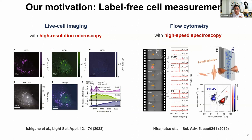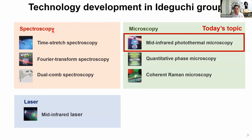Our group's motivation is label-free cell measurement, and we develop various kinds of measurement techniques. For example, we build high-resolution microscopy, which can be used for live cell imaging — that's what I'm talking about today. We're also developing high-speed spectroscopy techniques for flow cytometry applications. We develop various spectroscopy and microscopy techniques, and we also develop the lasers themselves.